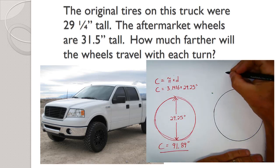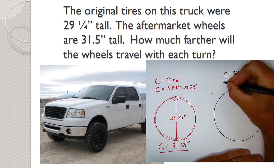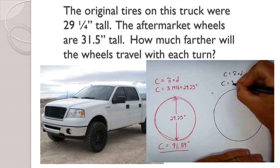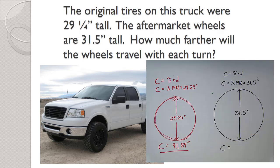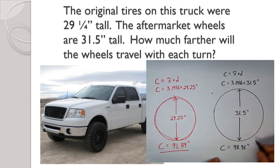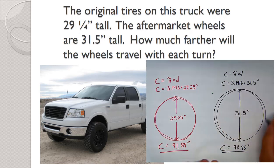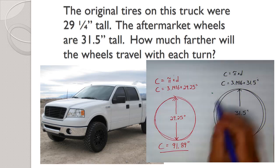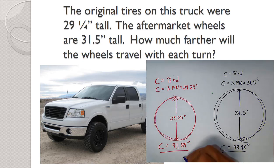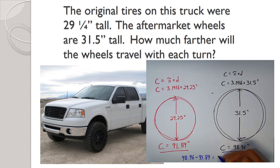For our aftermarket tires, C equals pi times diameter. The circumference for the larger wheel is 3.1416 times thirty-one and a half inches, which gives us ninety-eight point nine six inches. The question was how much farther will the wheels travel each time they turn — it's the difference. Ninety-eight point nine six minus ninety-one point eight nine gives us a difference of seven point zero seven inches farther per revolution.